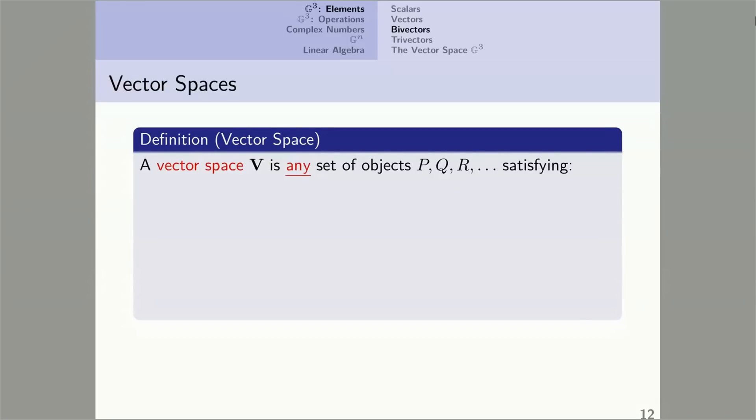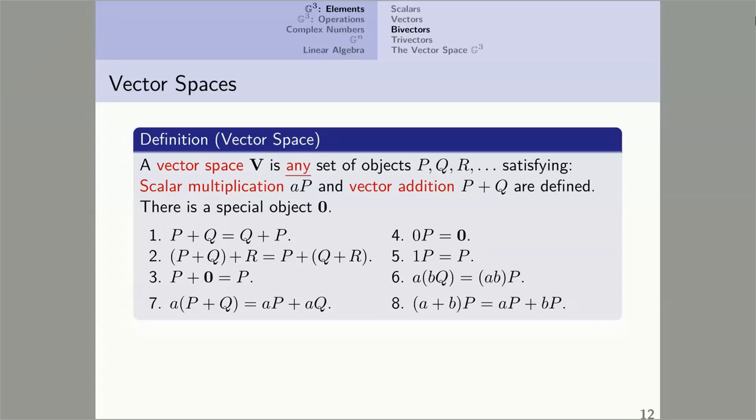A vector space is any set of objects, points. I'll denote them here P, Q, R, satisfying the following. Scalar multiplication and vector addition must be defined. There must be a special object zero, and the following rules, axioms, must be true. Here's a list of them. They should be familiar to you. I've arranged them so that one through three apply to addition, four through six apply to scalar multiplication, and seven and eight apply to the interaction between the two operations.